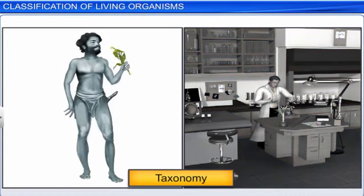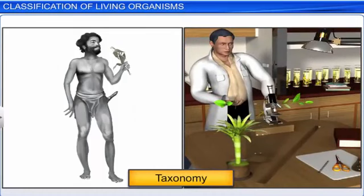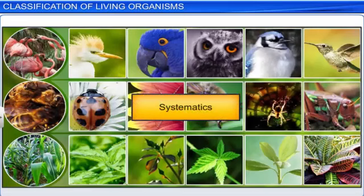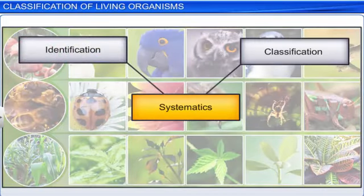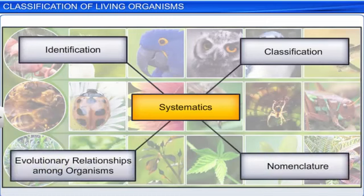Taxonomy isn't new to humans. For ages, humans have been interested in knowing about different types of organisms and the relationships among them. This branch of study is known as systematics, which means systematic arrangement of organisms. However, today, systematics also includes the identification, classification, nomenclature, as well as evolutionary relationships among organisms.